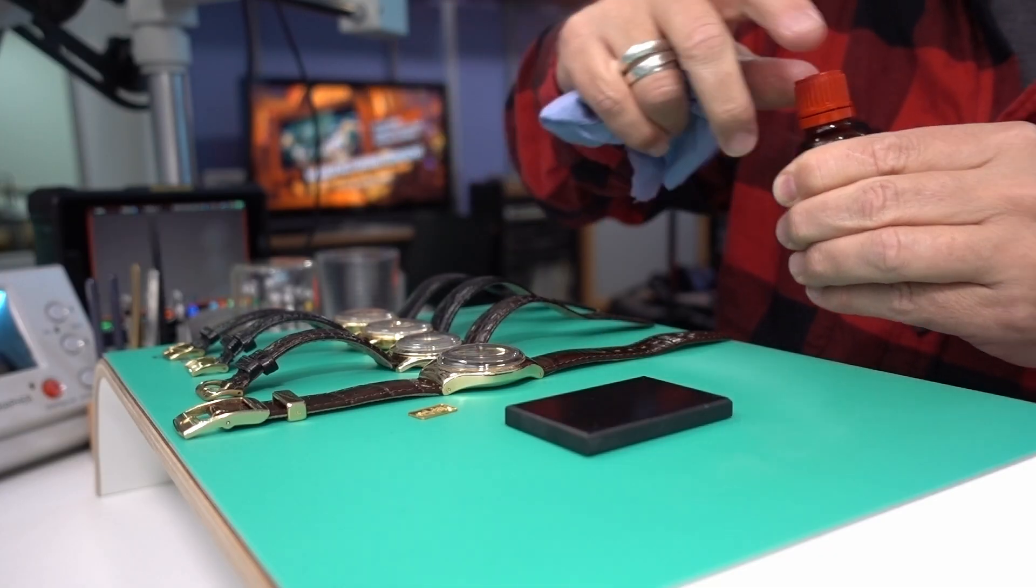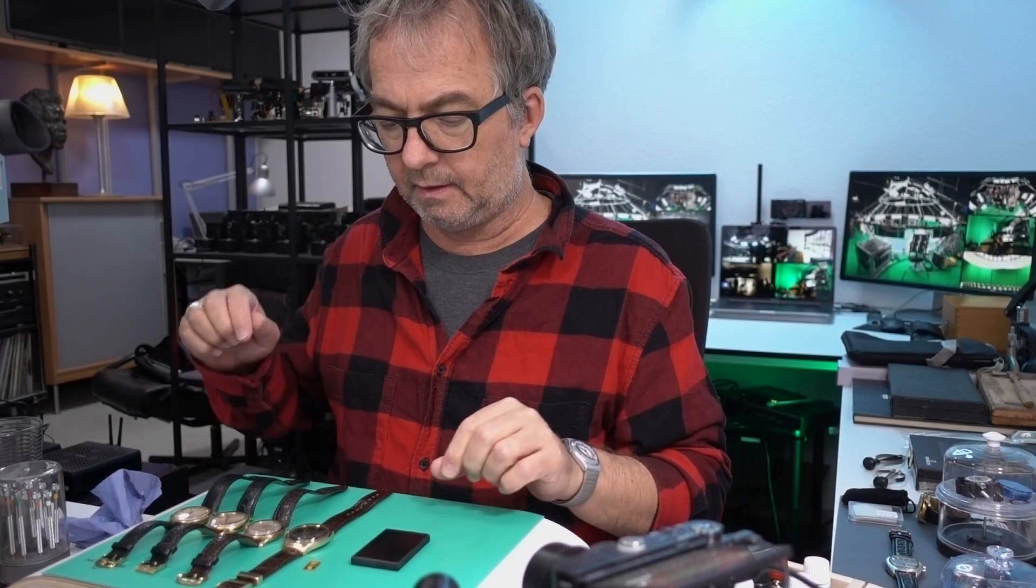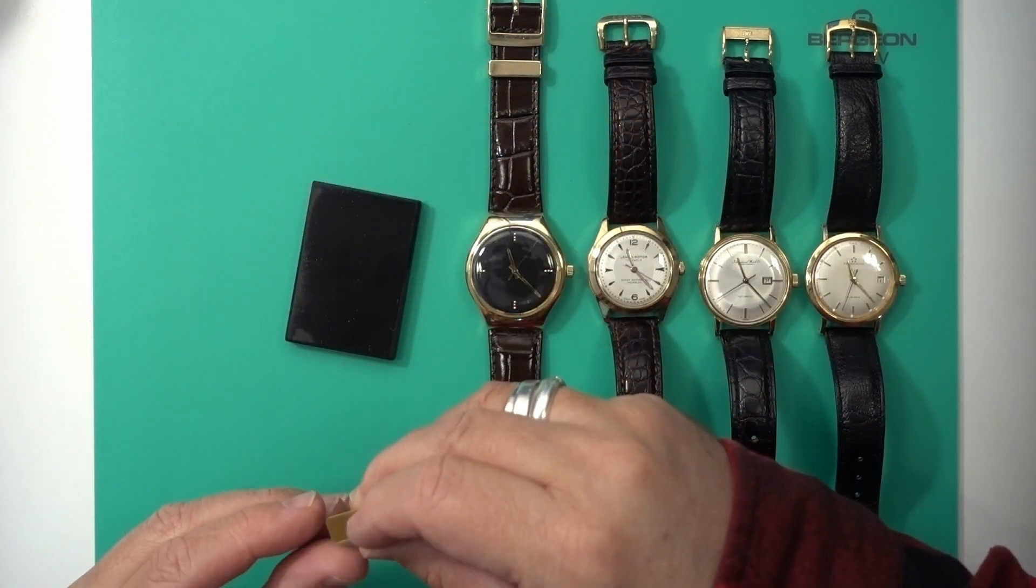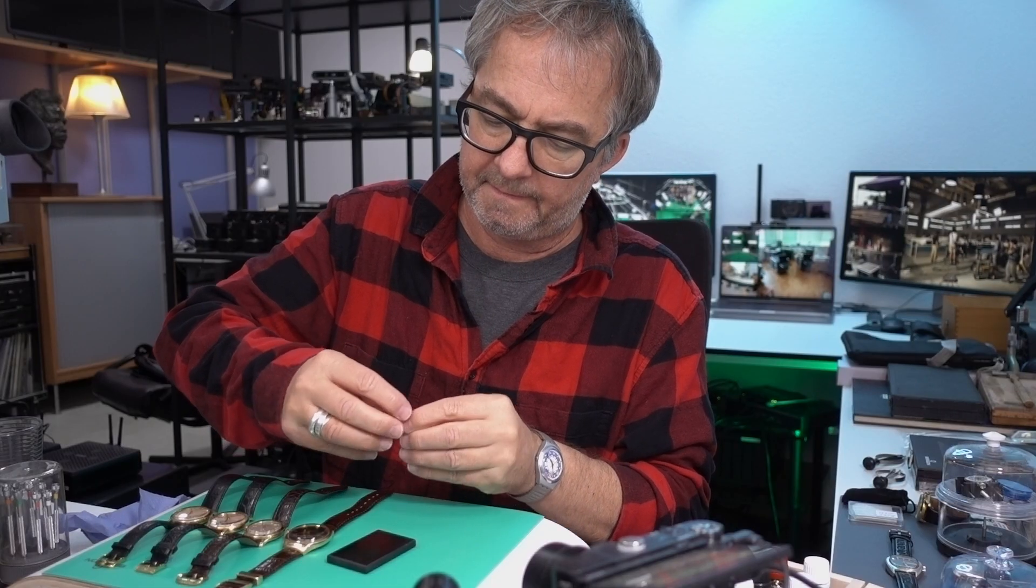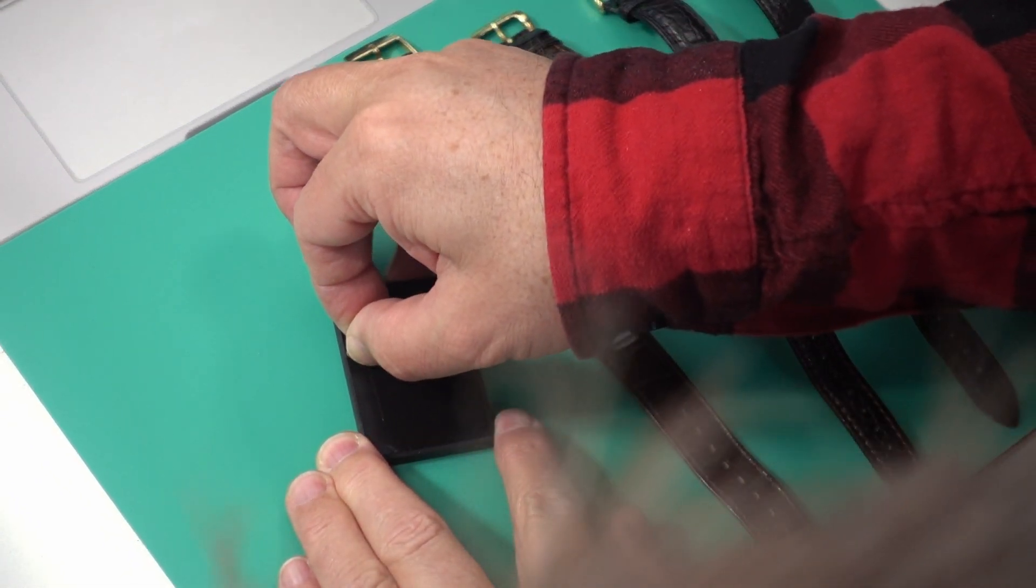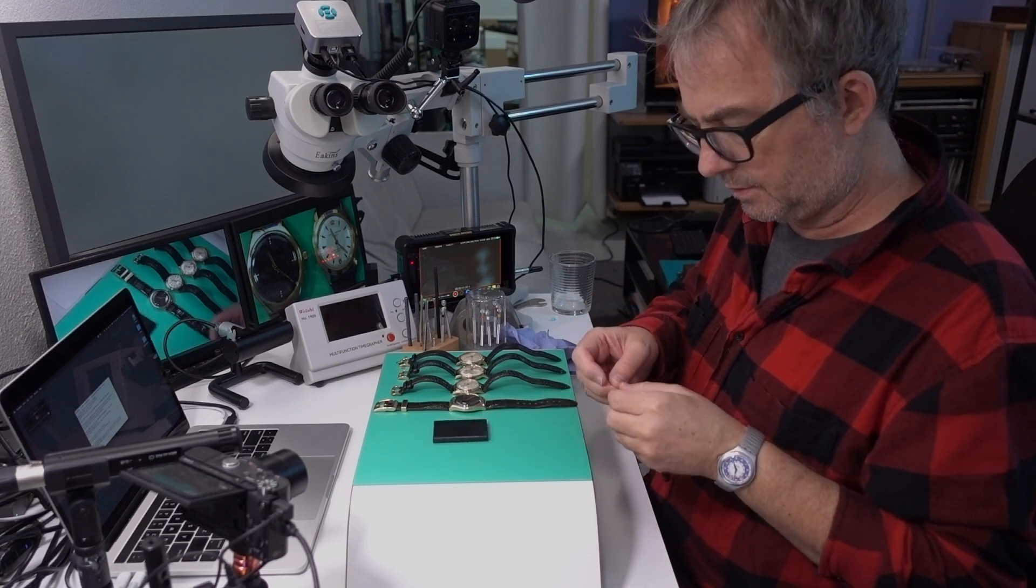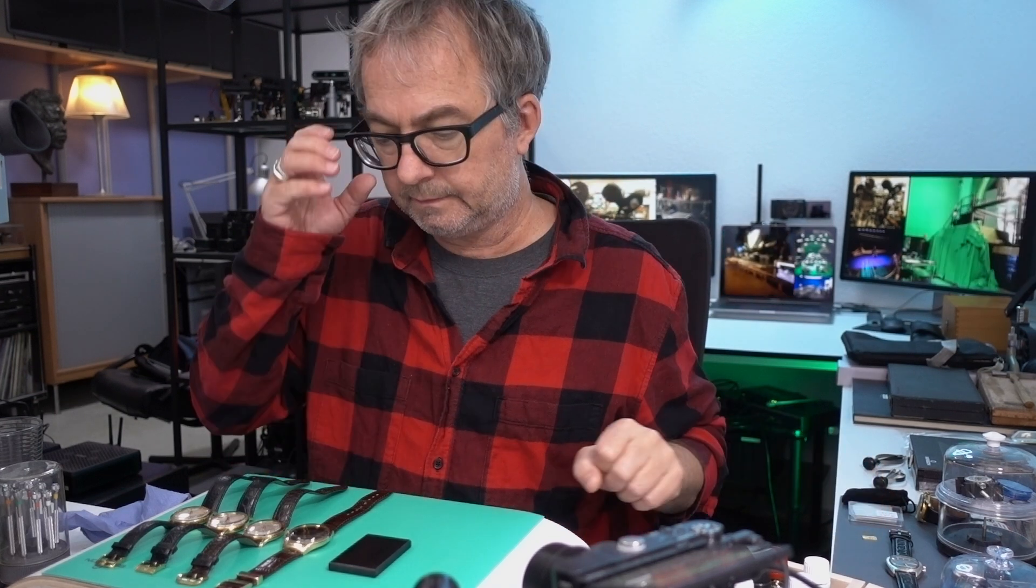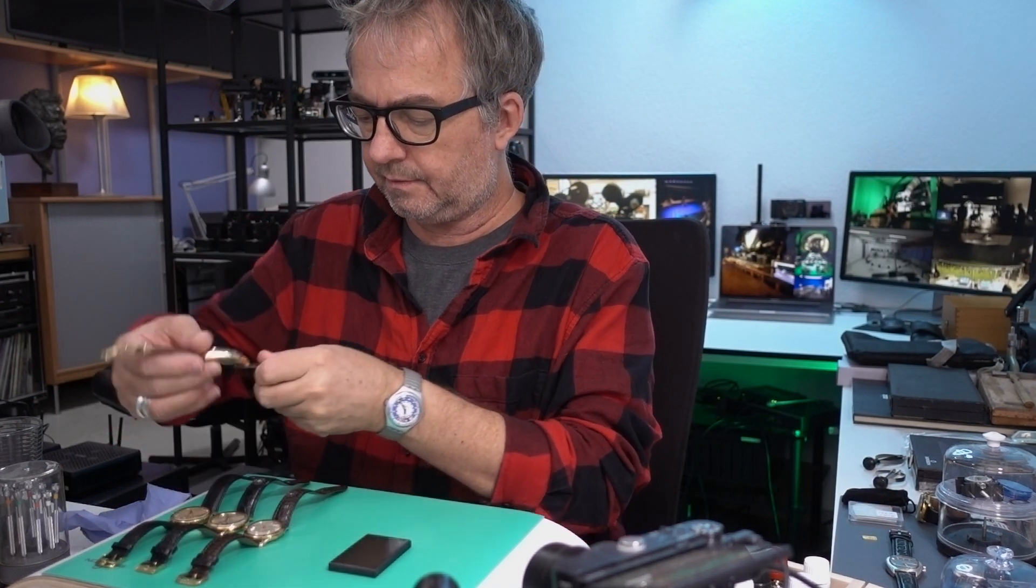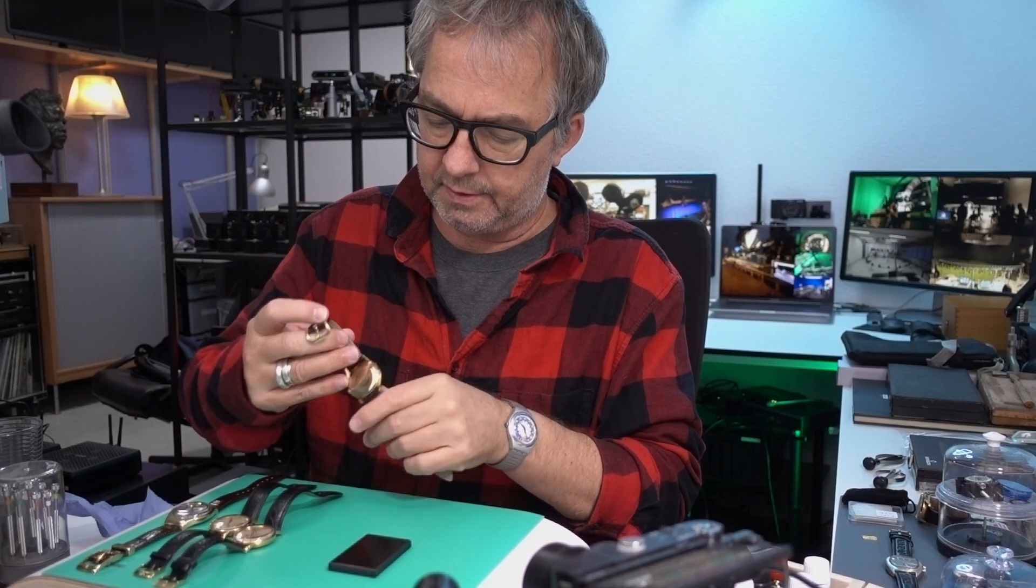And then you make little streaks on the stone. So we'll do like a reference that's just the 24 carat gold. And then we'll do, I kind of want to do this one last. Let's do the 14 carat.